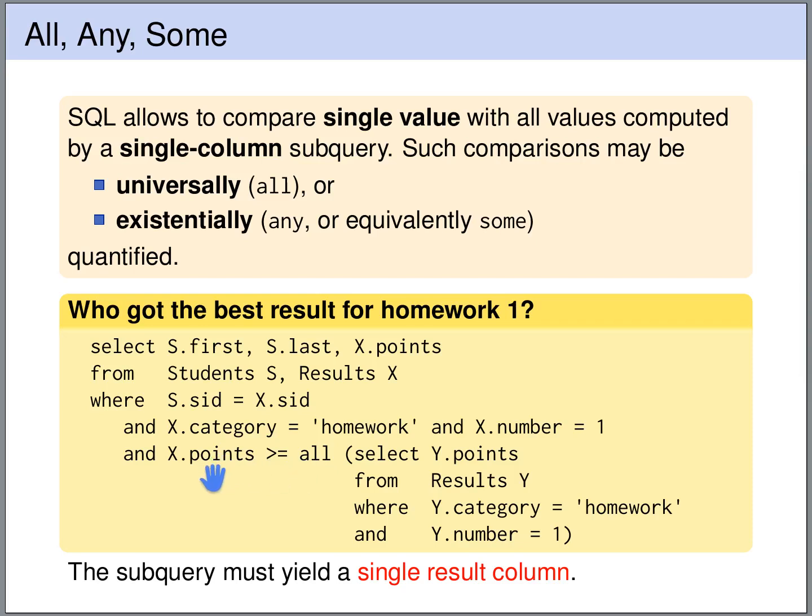We compare x.points with all the values and this comparison always needs to be true. We can also existentially quantify this comparison. If we write here any or some, then this comparison will be true if x.points is greater or equal than at least one of the values computed by the subquery.